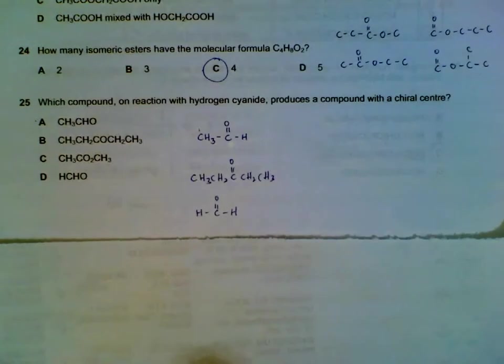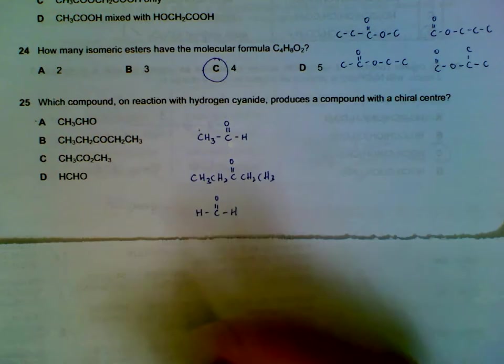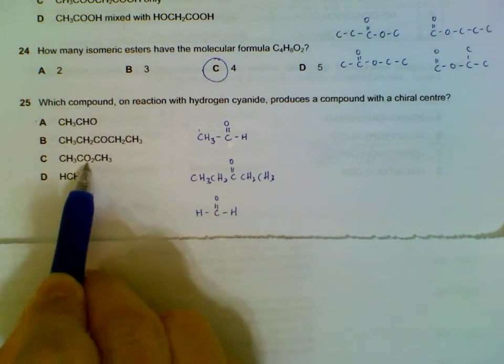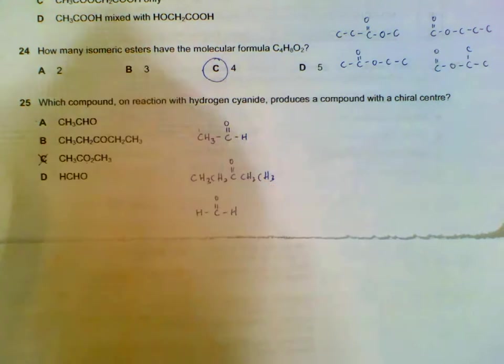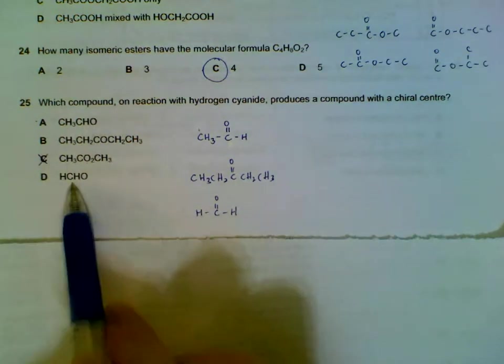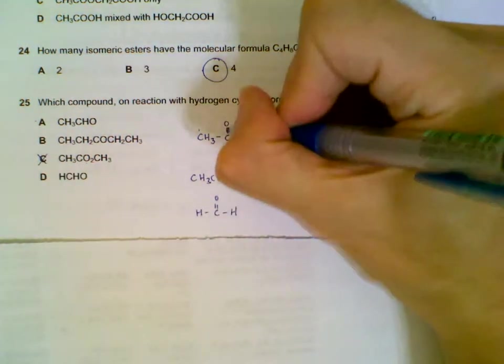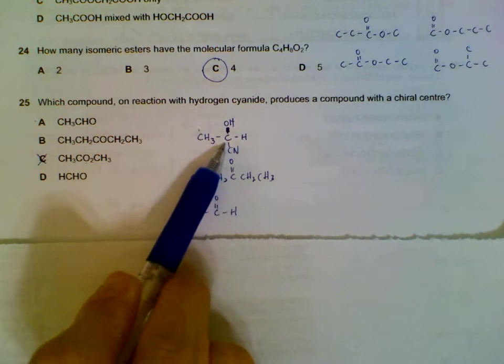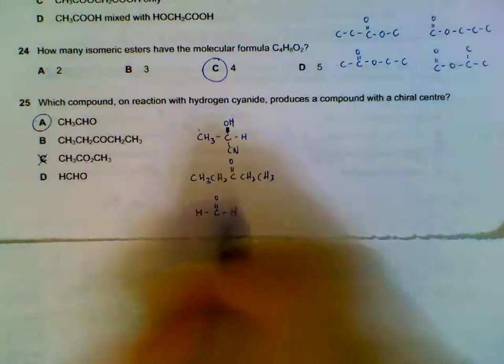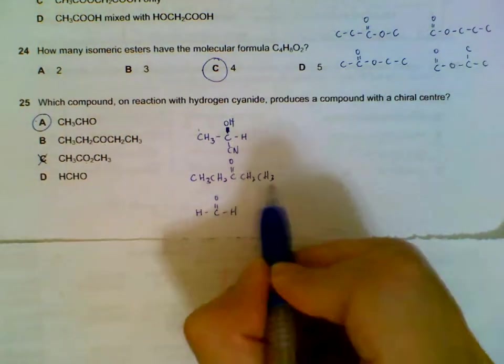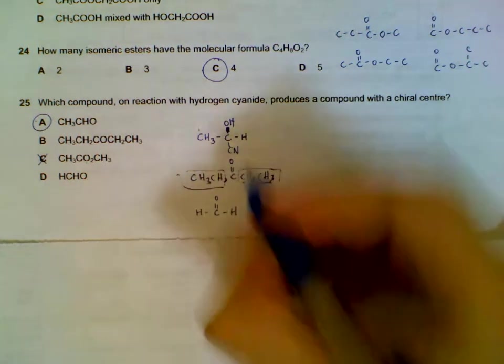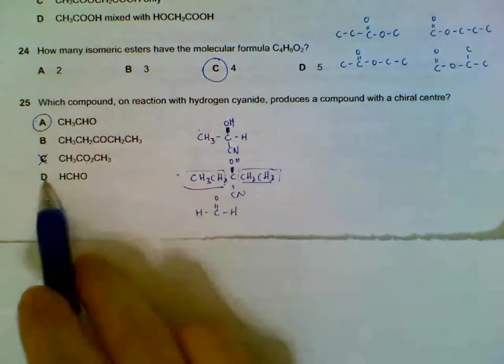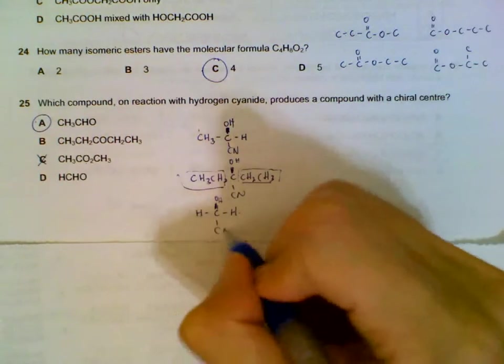Question 25: which compound on reaction will give a chiral carbon? We have our carbonyls. This is an ester, so this one will not need to be considered. We have to check A, B and D, which are our carbonyls. So adding of CN, the H will be here, the CN will be on the other side, and then we have our chiral carbon here. So A will be the answer. We can check B: B, we have two groups that are the same, so adding a H and a CN on this side will not give us a chiral carbon. Same for D, we have two hydrogens, so we will not get a chiral carbon here.